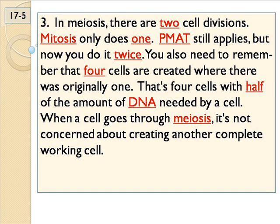One of the major differences between mitosis and meiosis: meiosis has two divisions back to back. Mitosis has one division and you're done. Also, meiosis will cut your chromosome number in half — mitosis does not. The only reason to do meiosis is reproduction, whether you're a horse, a dog, a cow, or a human.